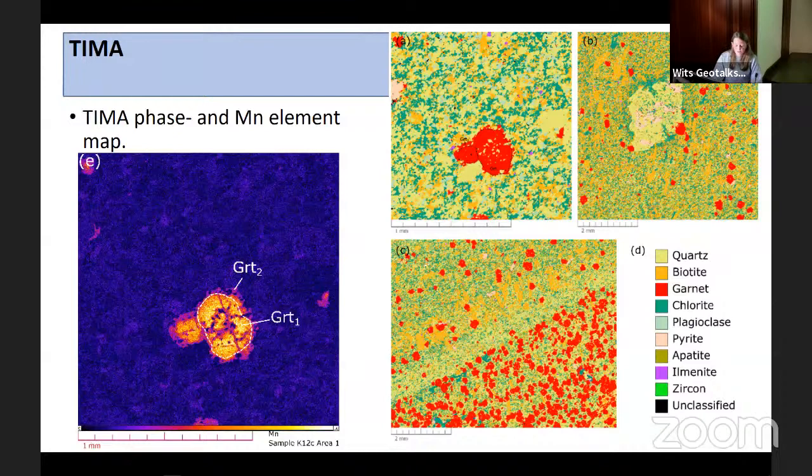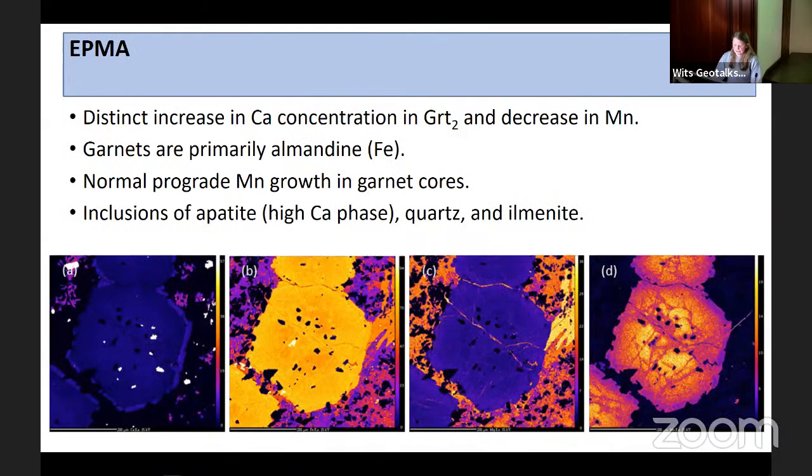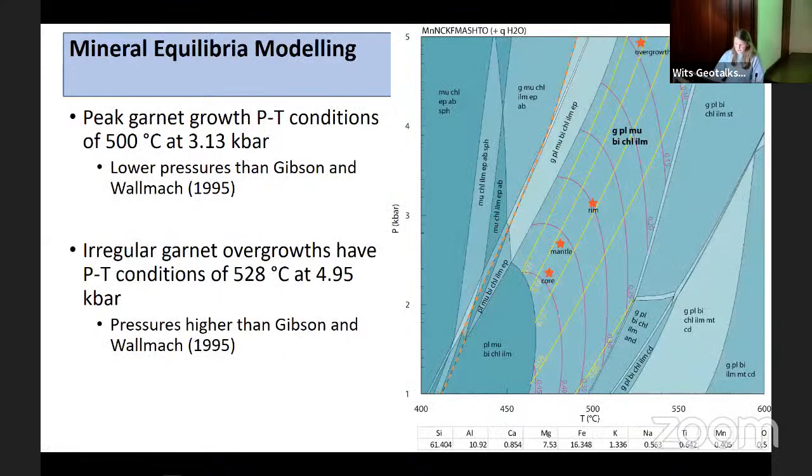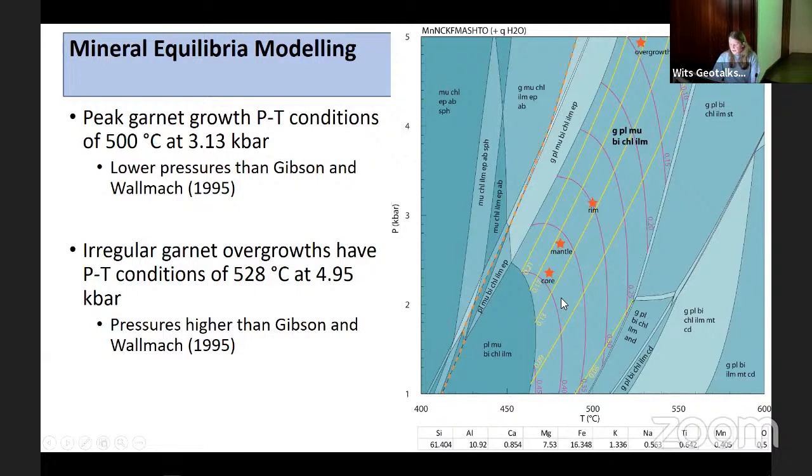Looking at garnets, the main inclusion compositions are quartz and ilmenite with some apatite. What's of interest are these irregular overgrowths on the garnet grain. The pseudotachylite cross-cuts garnet one and garnet two overgrowths. The TIMA phase manganese element map shows garnet one cores surrounded by garnet two overgrowths which are texturally very different. We have a normal prograde manganese path with decreasing concentration from core to rim, then a very distinct change in manganese concentration.